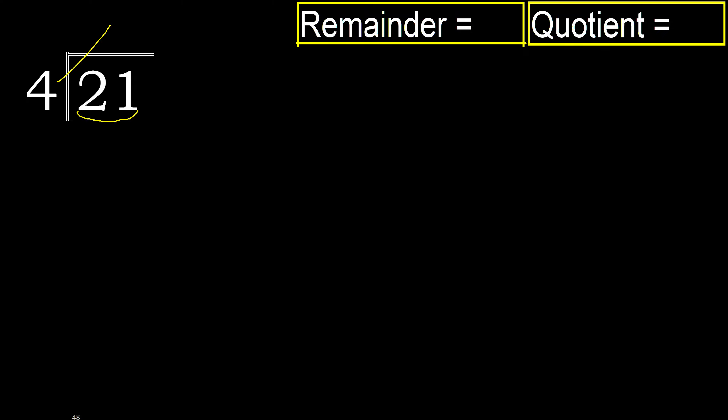4 multiplied by which number is nearest to 21 but not greater? 4 multiplied by 6 is 24, which is greater. 4 multiplied by 5 is 20 — it is not greater.